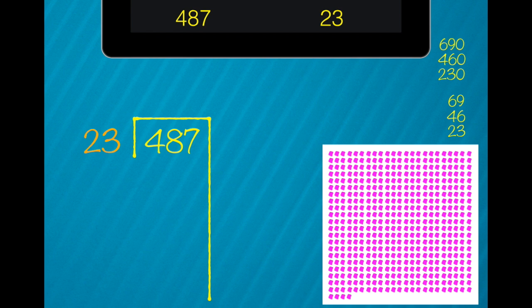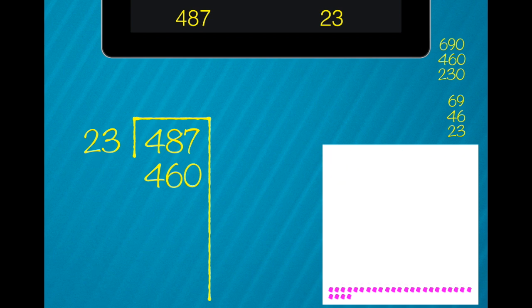Now looking at the total number of candies we should be able to share 460 of them without any confusion. We know this because 460 is close to the total 487 without sharing too many candies. So the students share 460 candies all at once. We know from our multiple tower that 23 goes into 460 20 times and now we are only left with 27 candies.